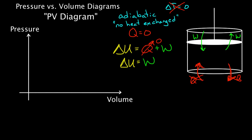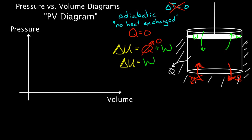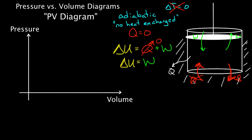How do you ensure no heat gets conducted? Insulate the container, and make the process happen as fast as possible — the opposite of an isothermal process. For isothermal we wanted the process slow so heat had time to flow. Here we want it so fast that heat has no time to flow in or out, ensuring Q is actually zero and the process is truly adiabatic.